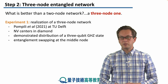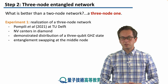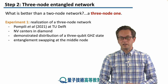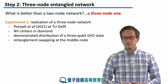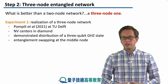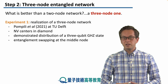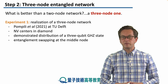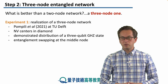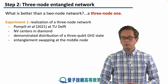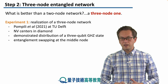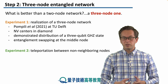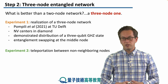The two experiments we're going to cover are the following. The first one was performed by Pompili and his collaborators in 2021 at the University of Delft. Their physical system was nitrogen vacancy centers in diamond. They managed to demonstrate distribution of a three-qubit GHZ state, as well as performing entanglement swapping at the middle node and establishing entanglement between non-neighboring nodes of their network. The second experiment used this entanglement by showing that they can teleport between non-neighboring nodes.